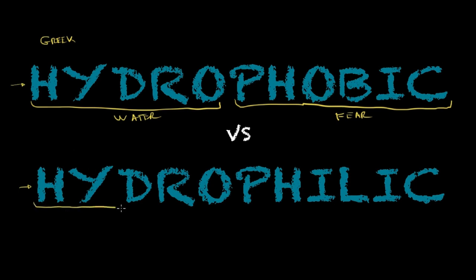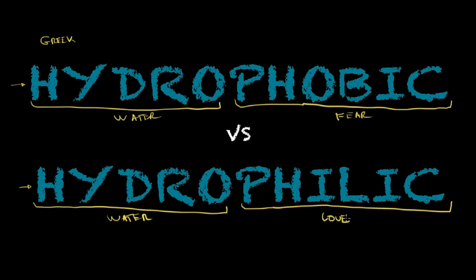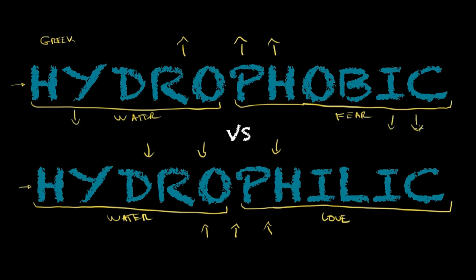Now hydrophilic — same thing: hydro meaning water, and philic means love. So love of water, meaning that a hydrophilic molecule will interact well with water and in some cases even be dissolved by water. So keep that in mind: hydrophobic means fear of water, so these molecules or parts of molecules will not interact very well with water. Meanwhile, hydrophilic, water-loving substances or molecules will attract water or will interact very well with water. I'm just drawing these arrows to give you a visual understanding of the interactions that these molecules will have and how we name them accordingly.